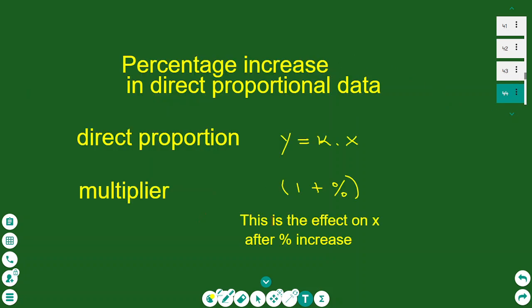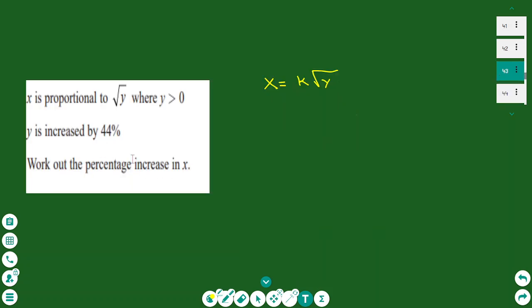If it's a percentage increase, we go to the multiplier. What is the multiplier? If it changes by x percent, then the multiplier is 1 plus the percentage. Now let's see this exercise.